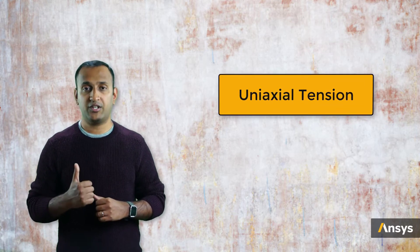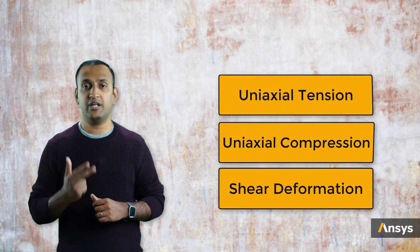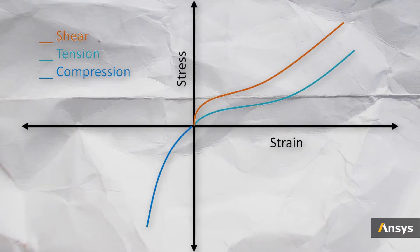In general, there are three different modes of deformation that can characterize the deviatoric behavior of hyperelastic materials: namely uniaxial tension, uniaxial compression, and shear deformation. As you can see from this chart, the value of stress developed in the part at the same amount of strain differs depending on the type of deformation.